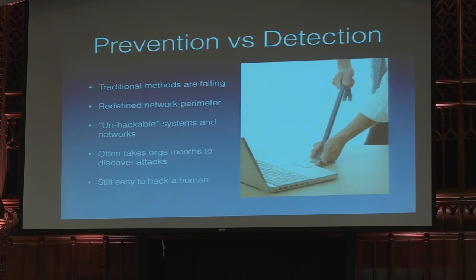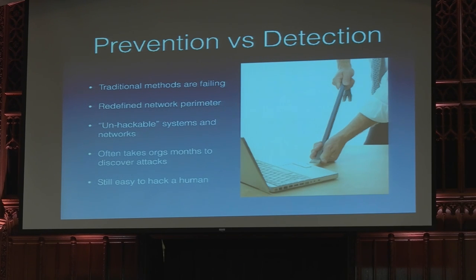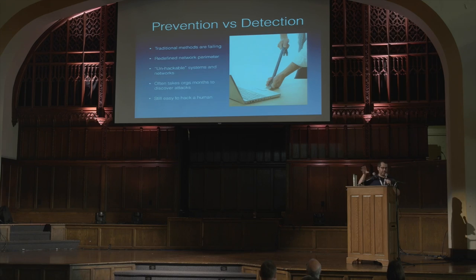Our network perimeter is changing. We need to really look at our workstations as being exposed to the internet, because through methods of spearphishing and ways that people go after an individual instead of a system, it's so easy to get outside and in through the perimeter. It's always going to be easier for an attacker to hack a human than a machine. So it's important for us to treat those systems as volatile and use anything we can to detect these issues as they happen.